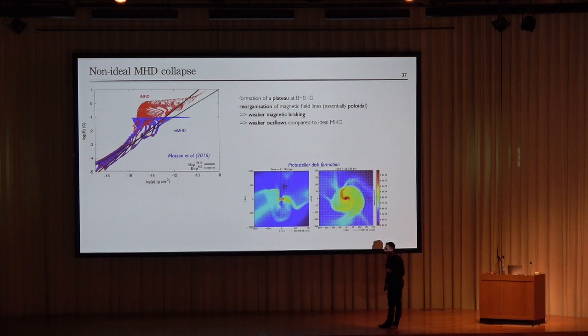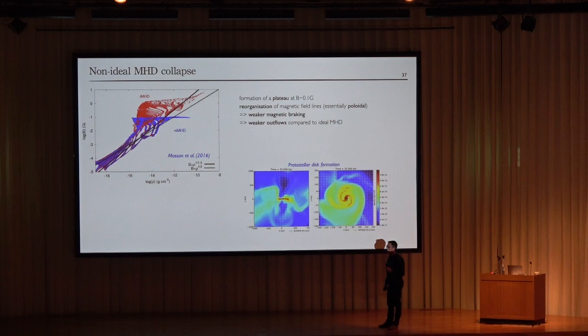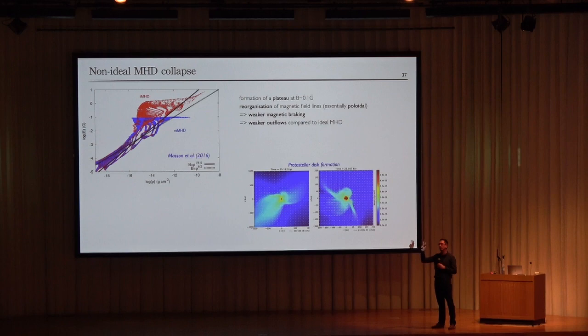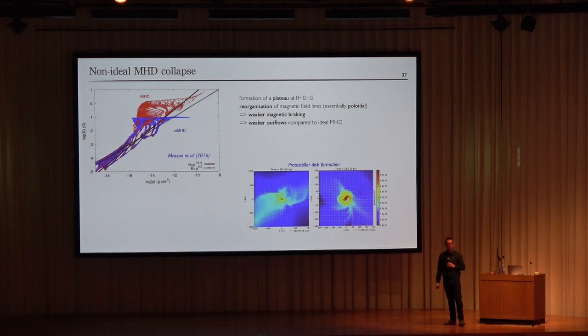A question from the Korean Astronomy and Space Science Institute: Is there any observational evidence or constraint on the relation between magnetic field strength and disk size? Response: To my knowledge, no — I have only shown two measurements of magnetic field in disks. Hopefully more will come in the next years.